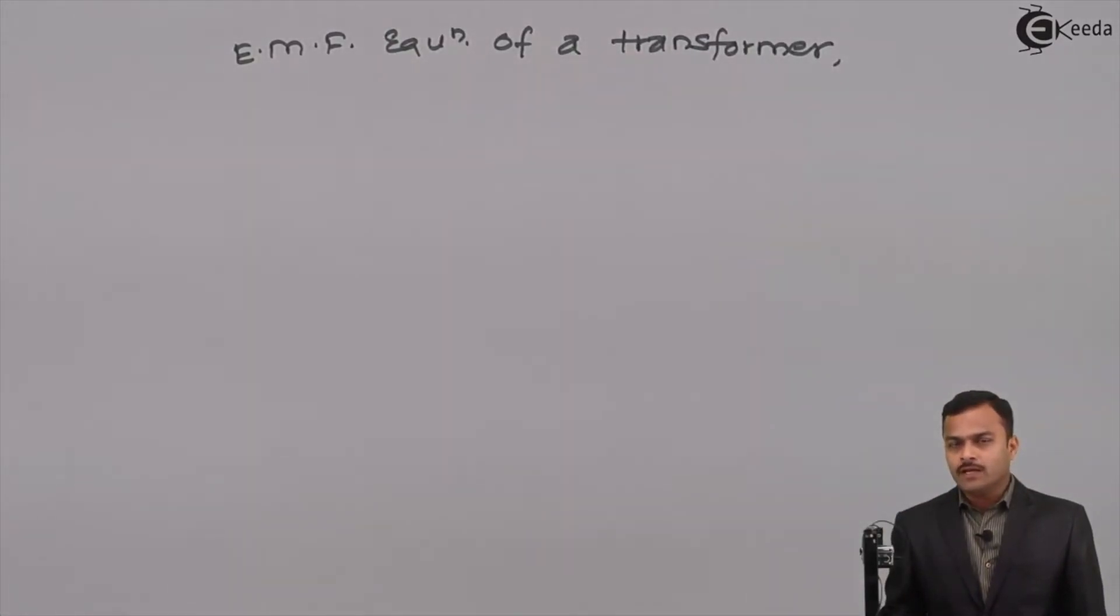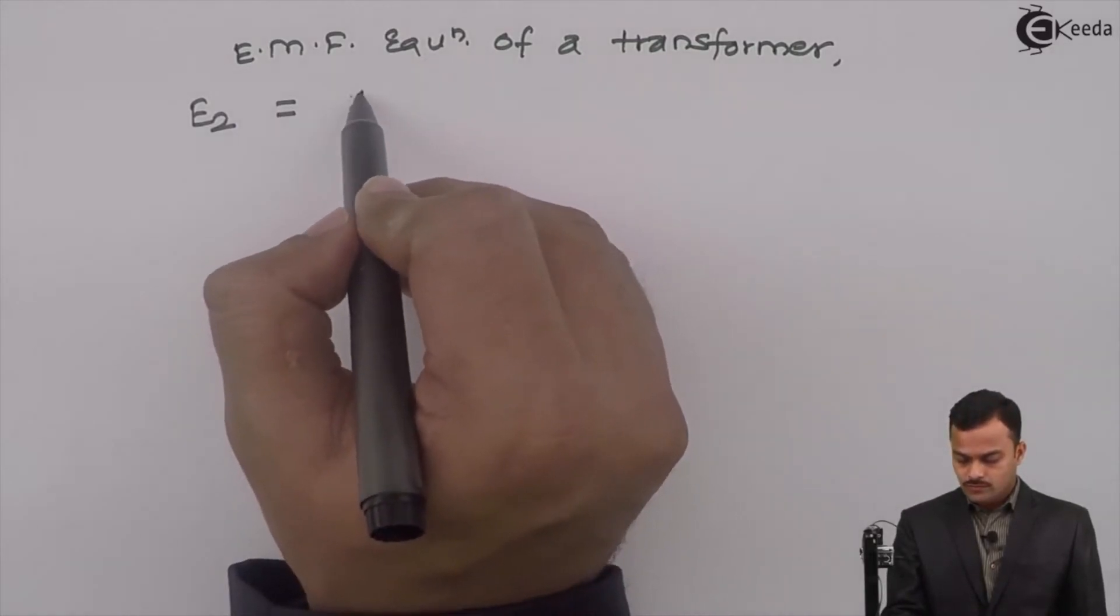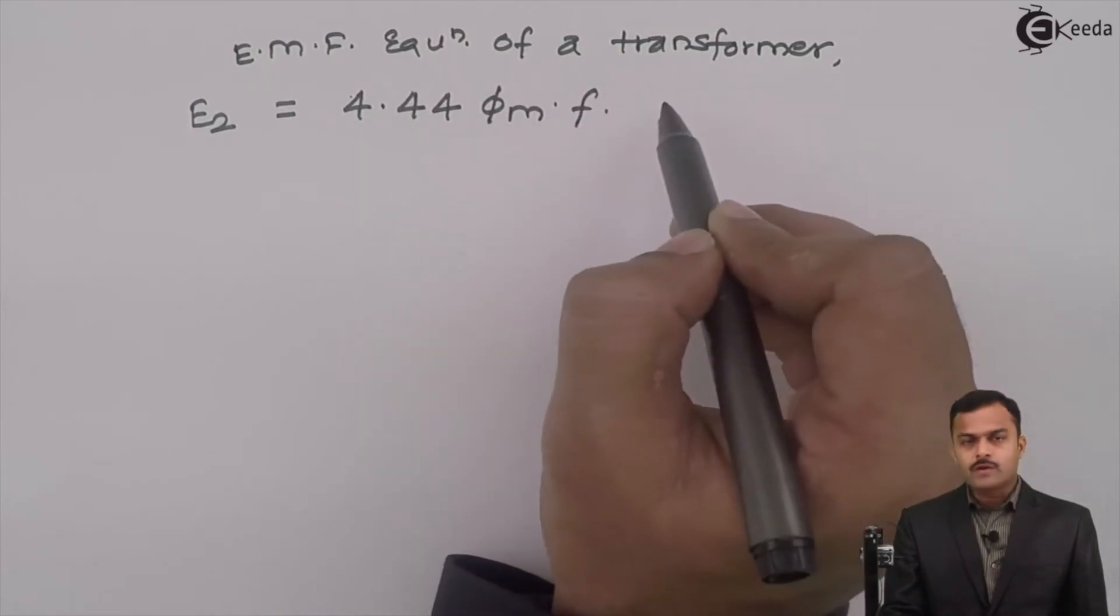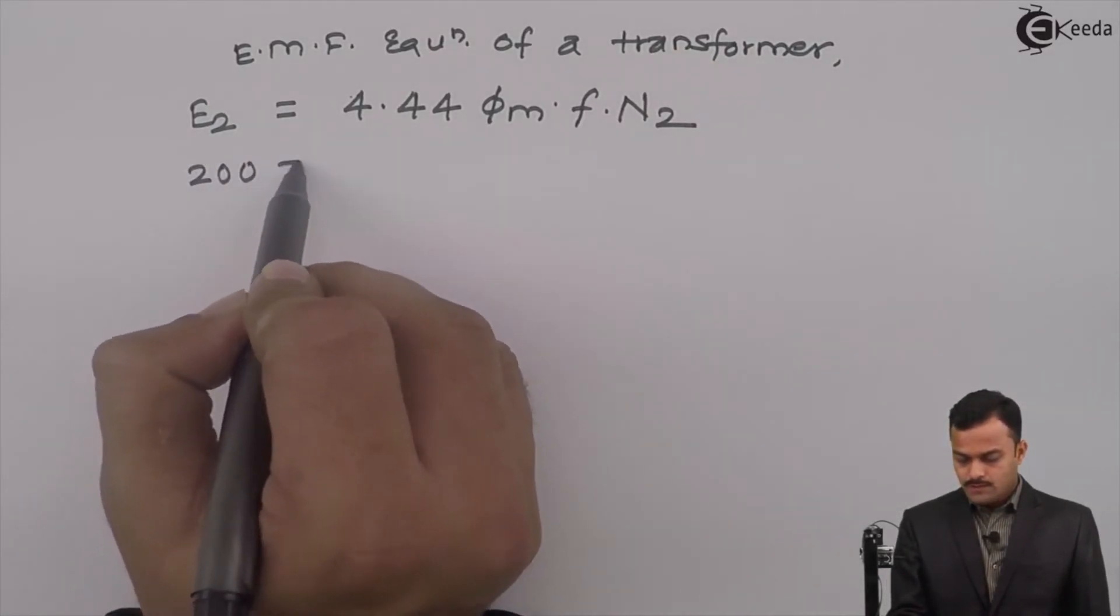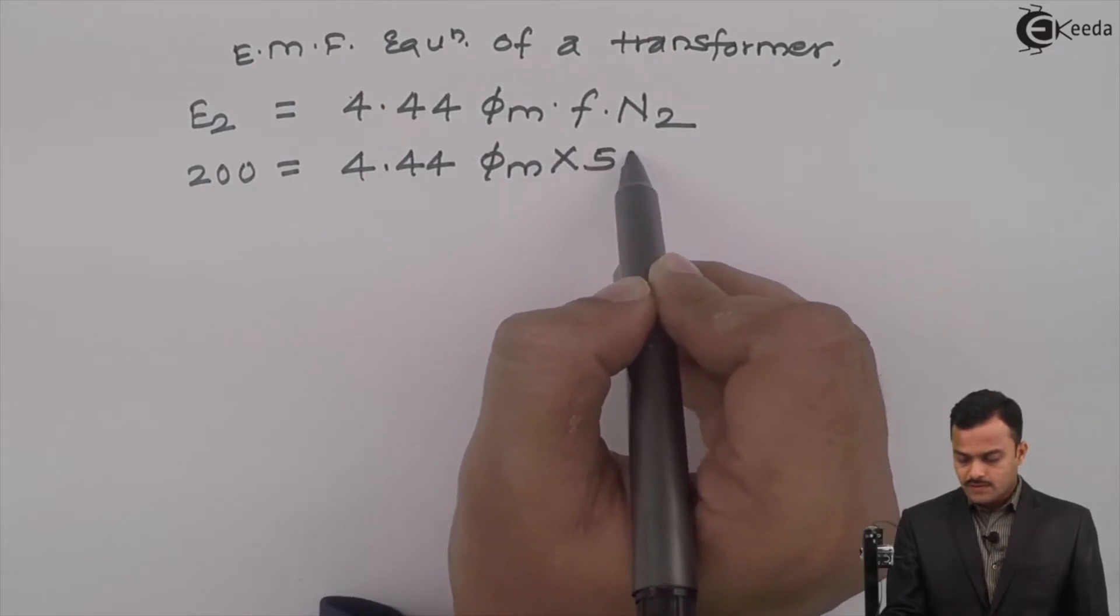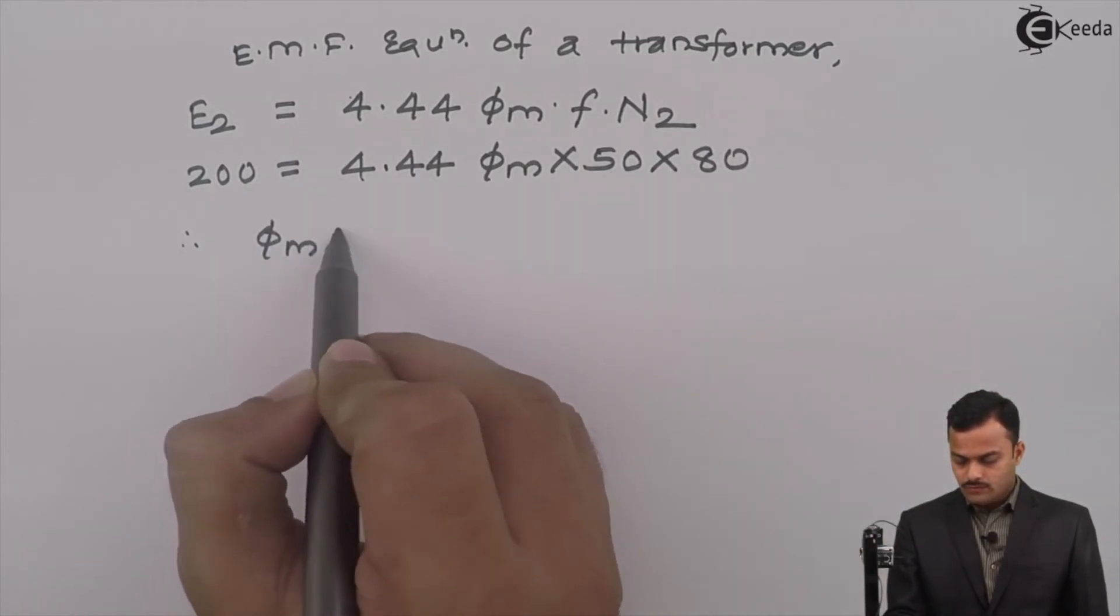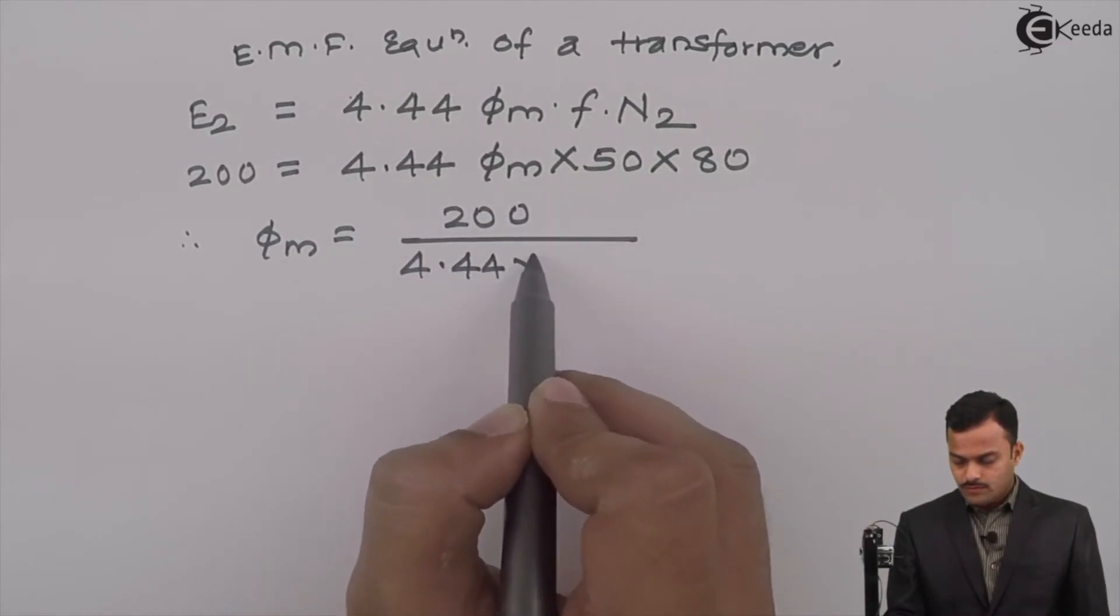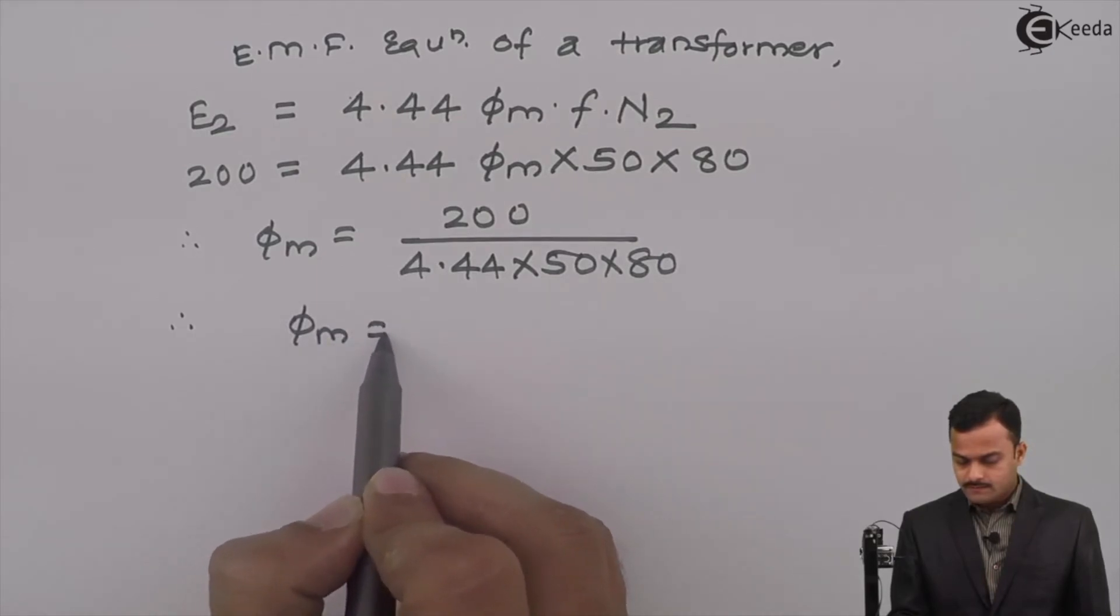You can use either E1 or E2. Let's use the equation of E2. The secondary side EMF equals 4.44 Phi M frequency multiplied by secondary side turns. So E2 equals 200 equals 4.44 Phi M is unknown, frequency is 50 Hertz, and number of secondary turns are given as 80. So Phi M equals 200 divided by 4.44 multiplied by 50 multiplied by 80. So Phi M you will get 0.0113 Weber.